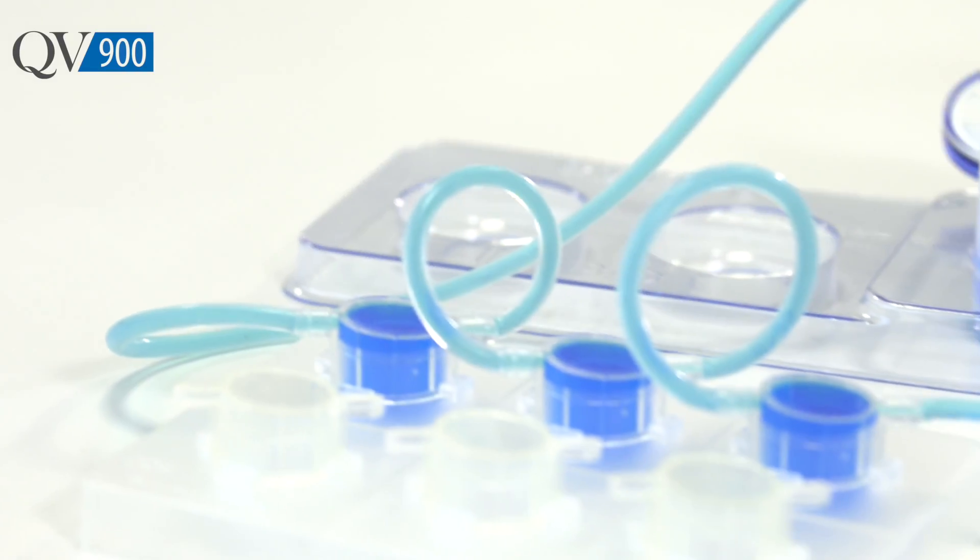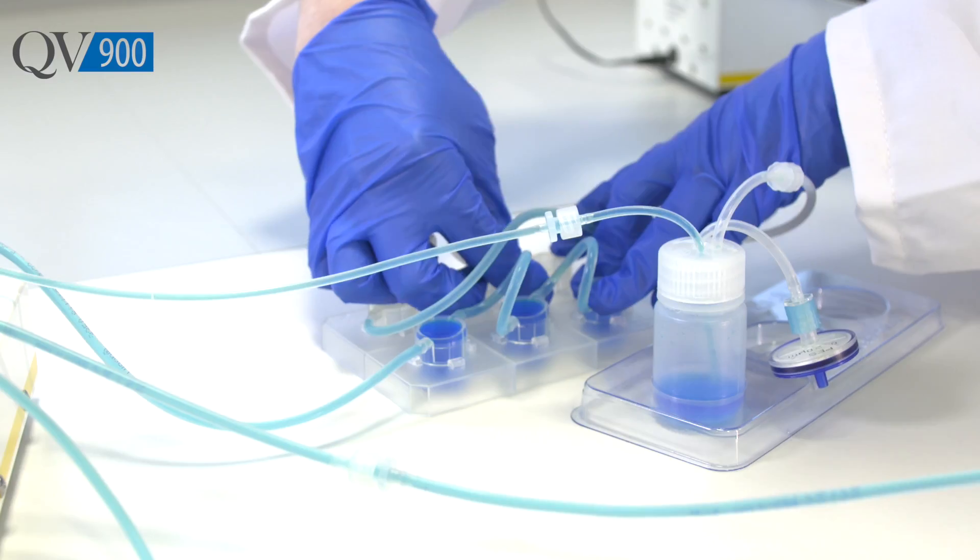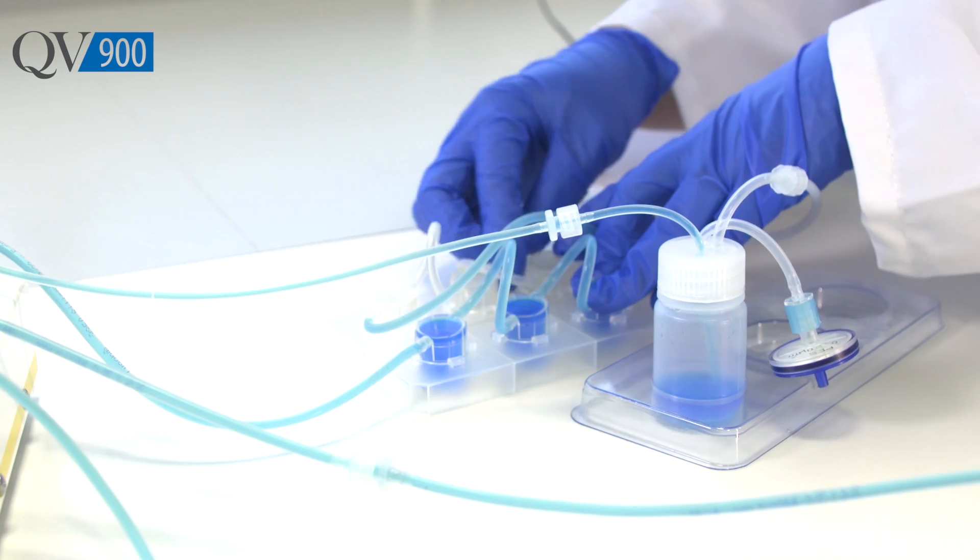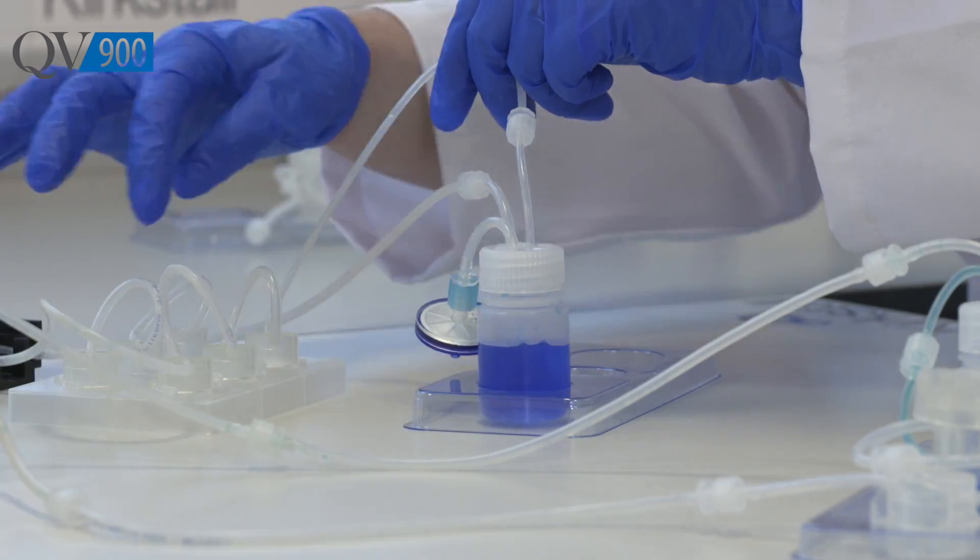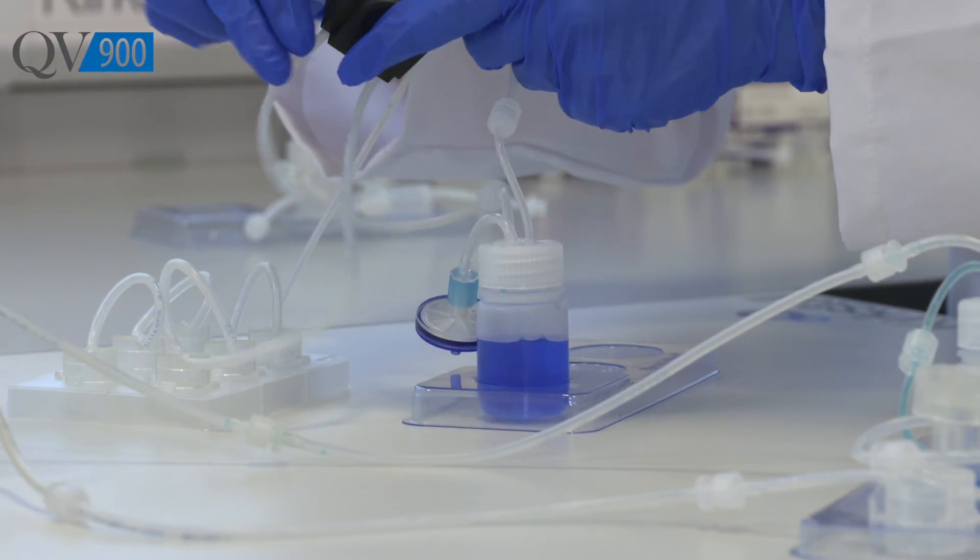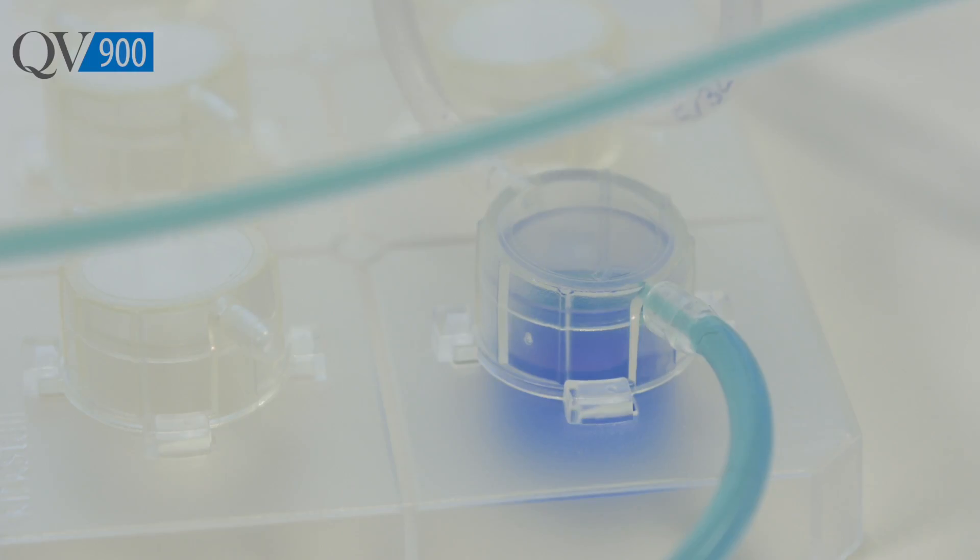The QV900 was specifically designed for use in industry who recognized its significant potential but wanted a higher throughput standardized Quasivivo system. It consists of six chambers on a standard multi-well plate footprint and is made from a material with little to no non-specific binding.